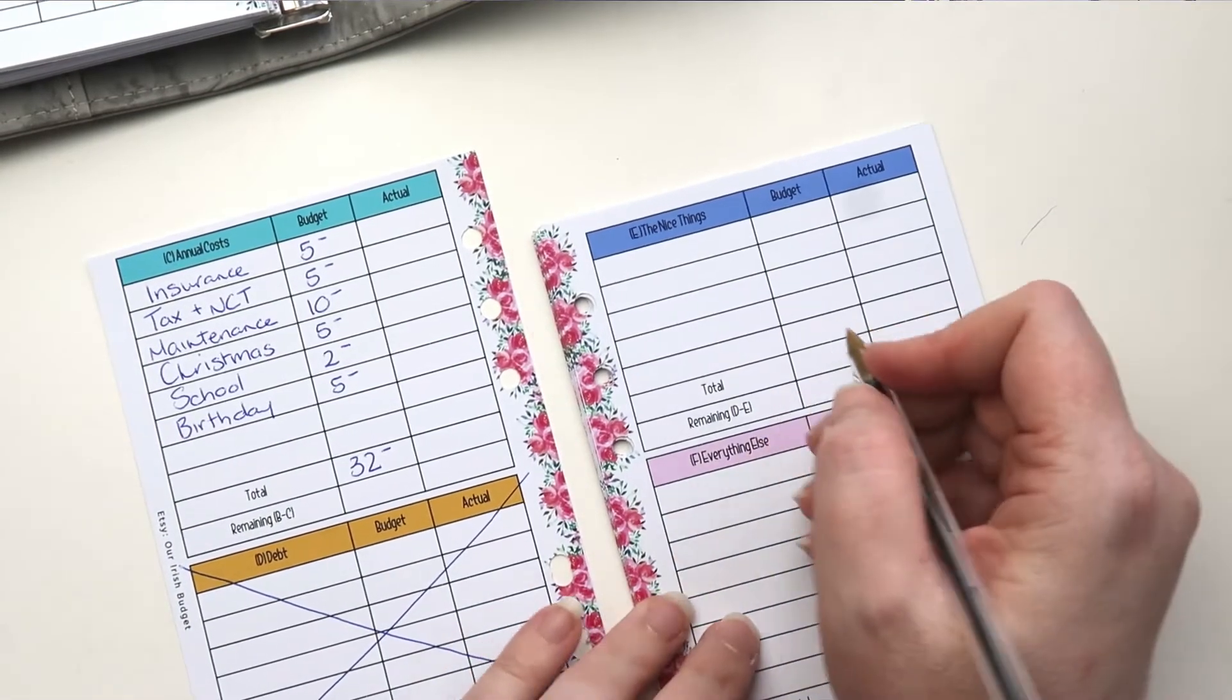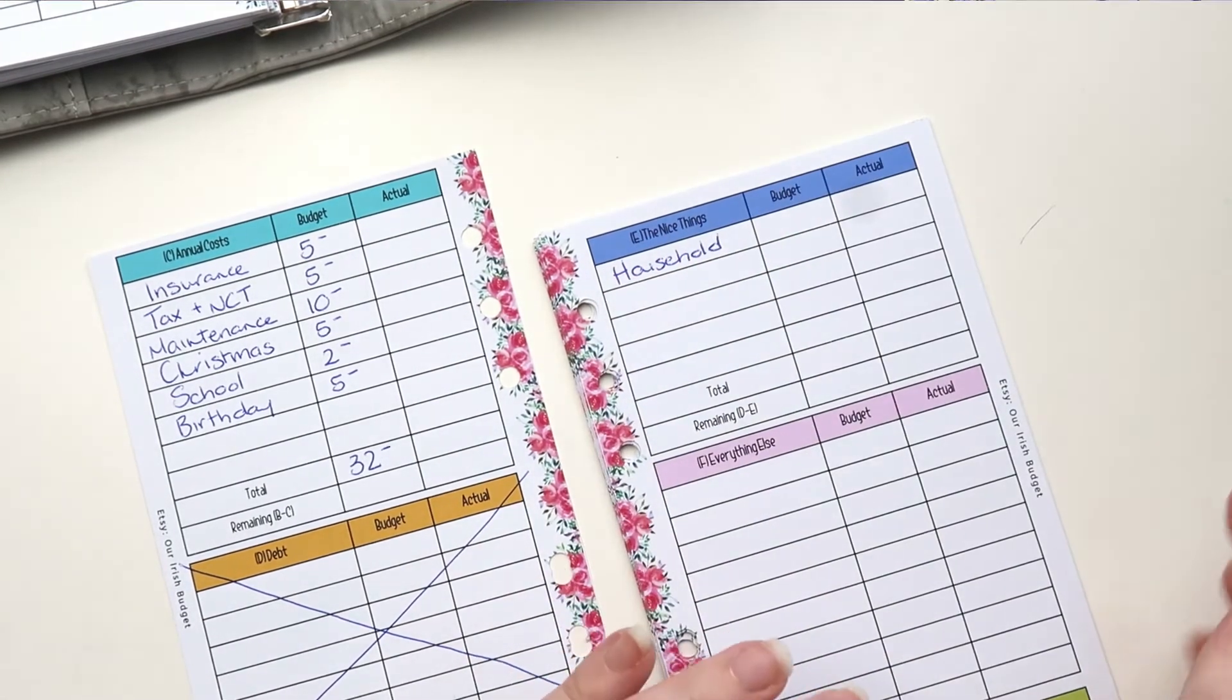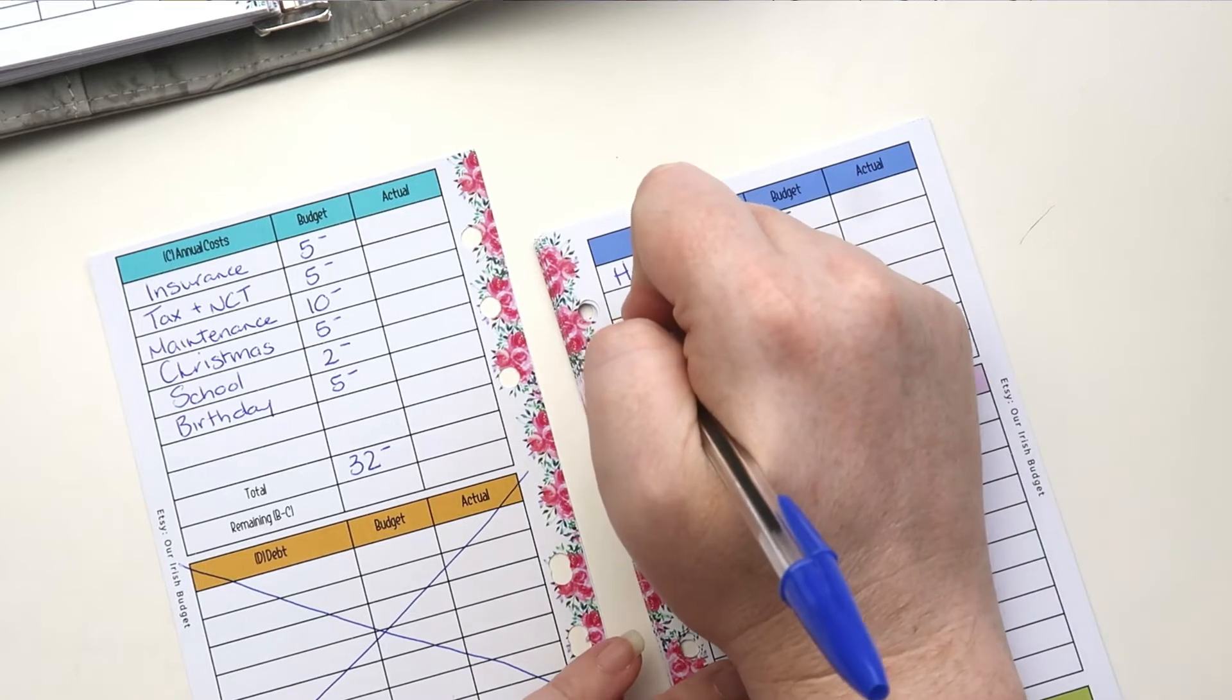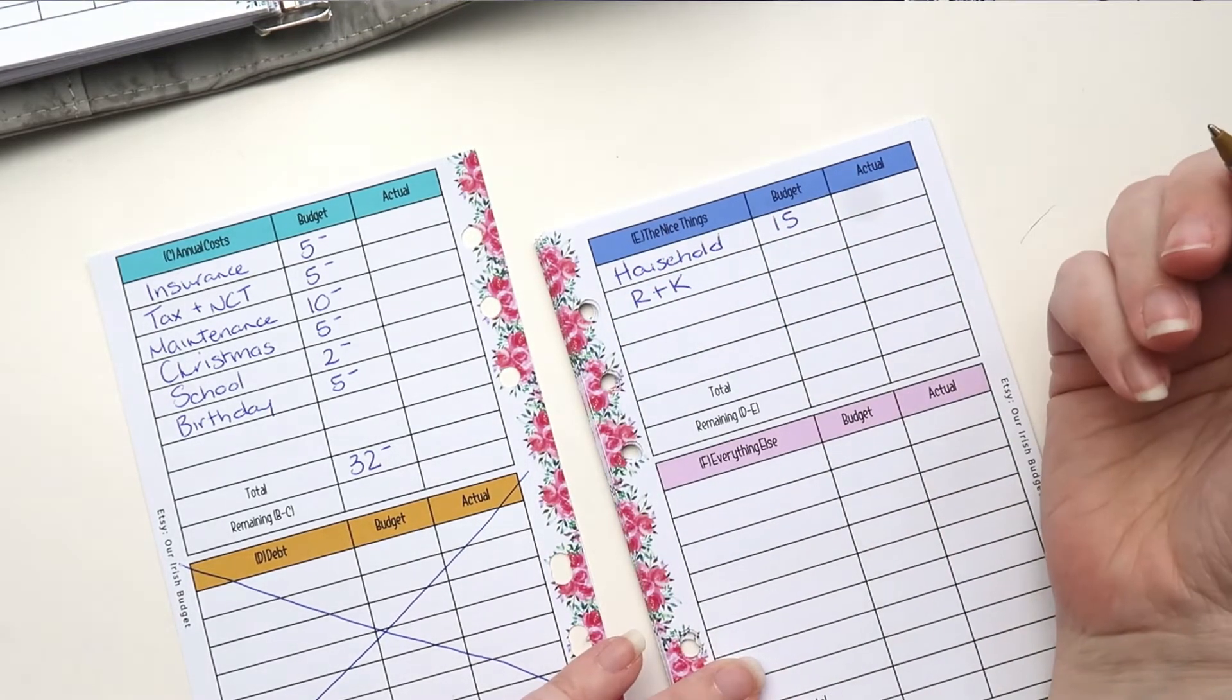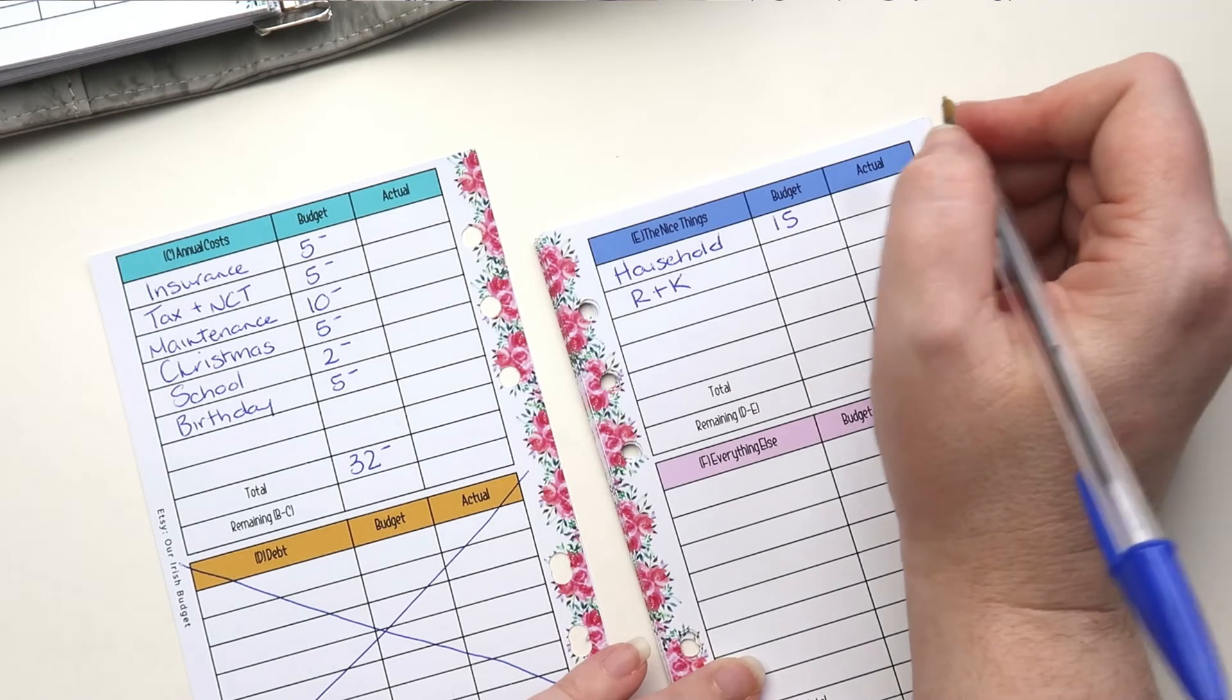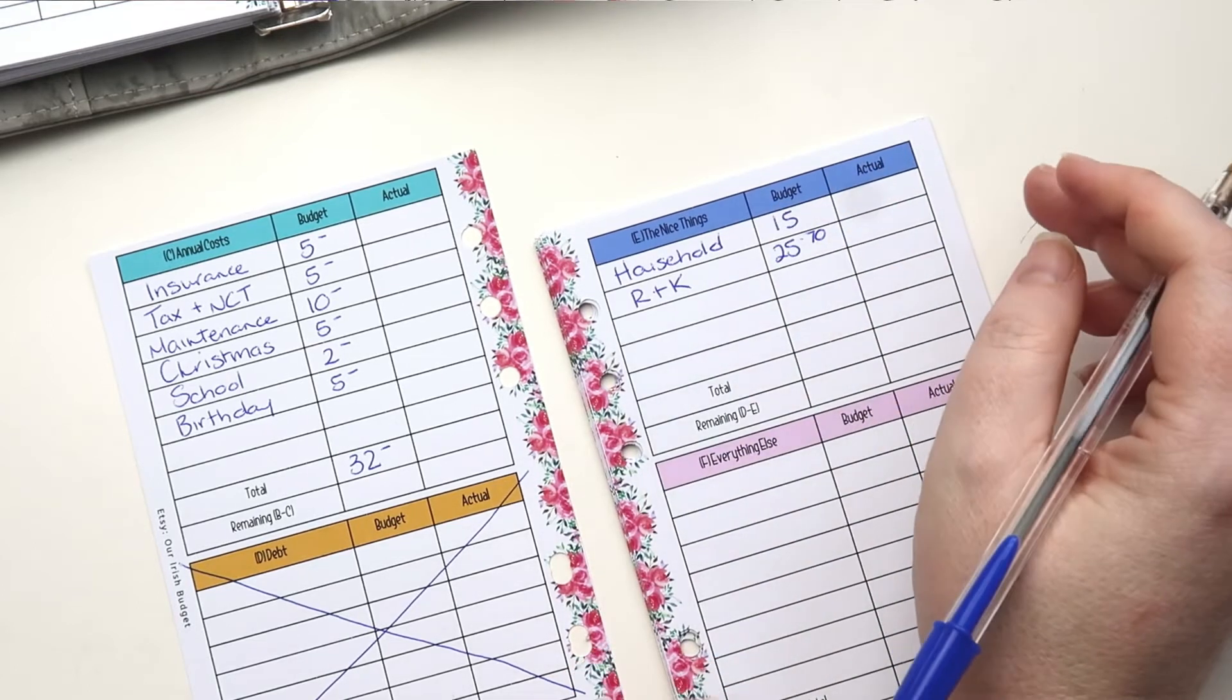So then we have household. That's just kind of, I keep that in cash inside my wallet in case I want to buy something for the house. We're going to put 15 euros into there. So mine and Robert's personal money that we take every week. Usually we buy lunch with it on a Friday. Again, this is an area where last week it was overspent. So we're going to put 25.70 there just to cover that overspend.